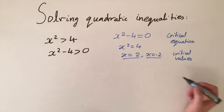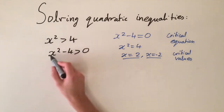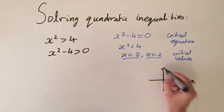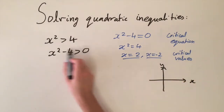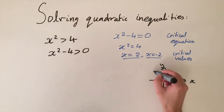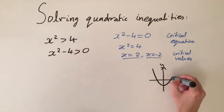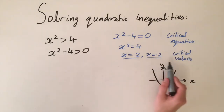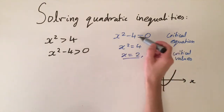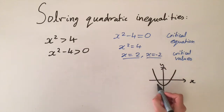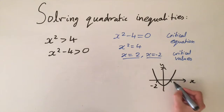With these critical values in mind, what we do next is we actually sketch this function. We look at the xy plane and we want to sketch this quadratic function, x squared minus four. It's just a parabola going upwards to infinity. The critical values tell us exactly where this function equals zero — they are exactly where the function crosses the x-axis — so we label those on the graph.